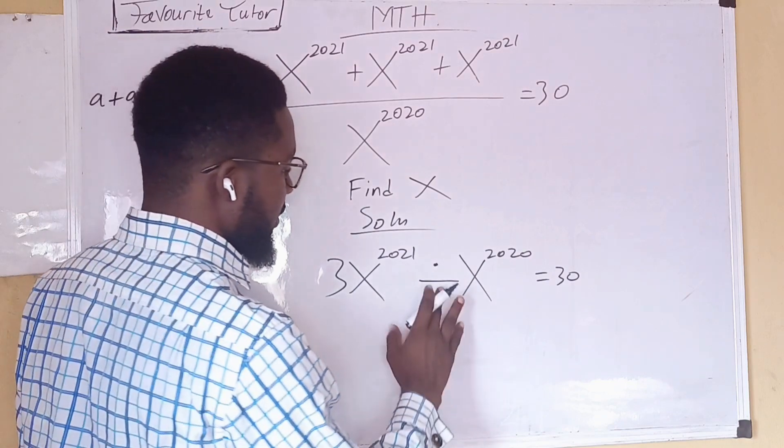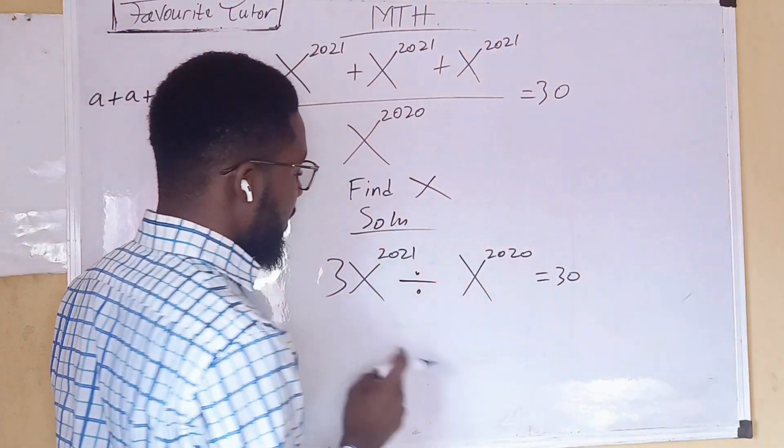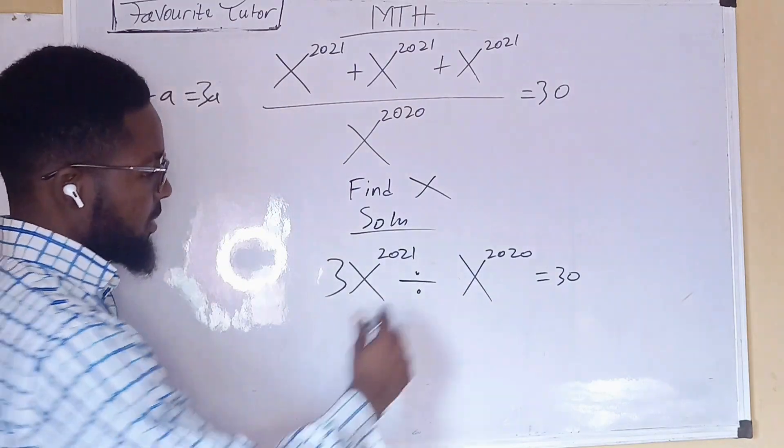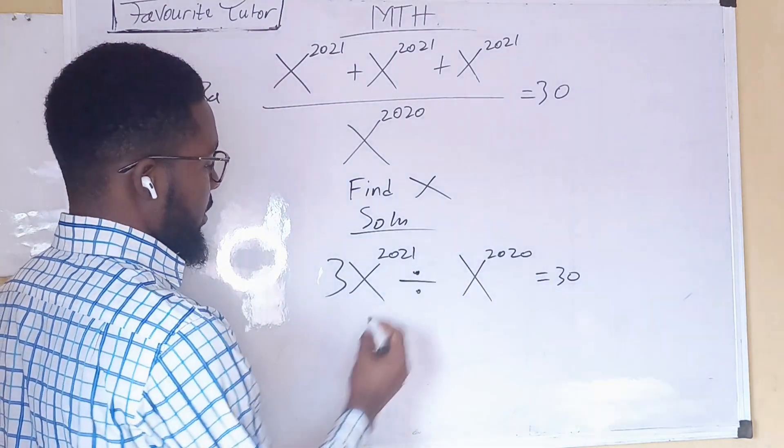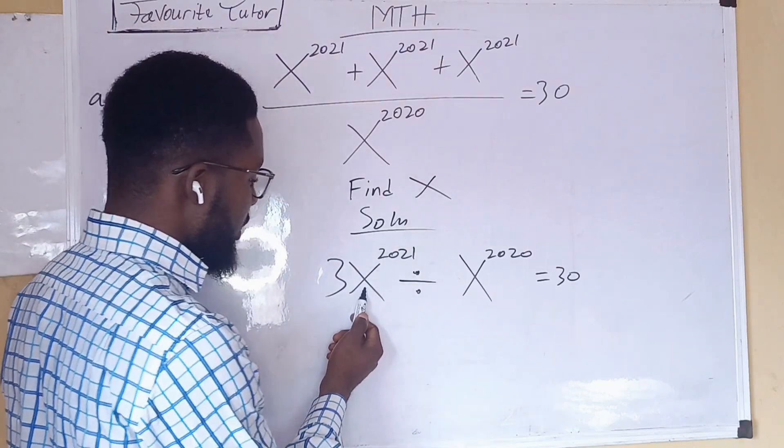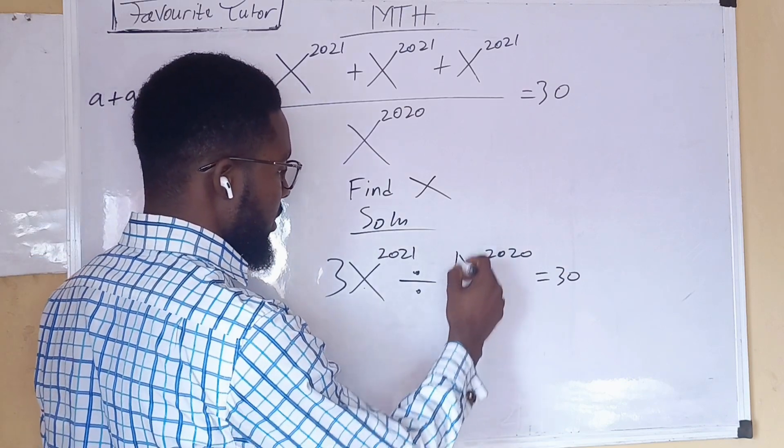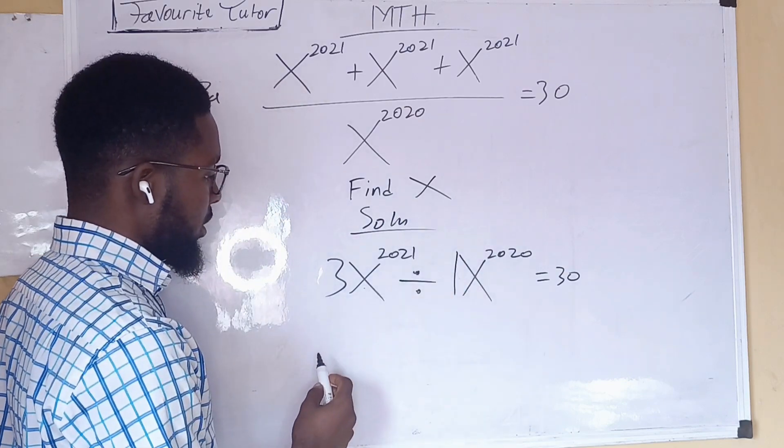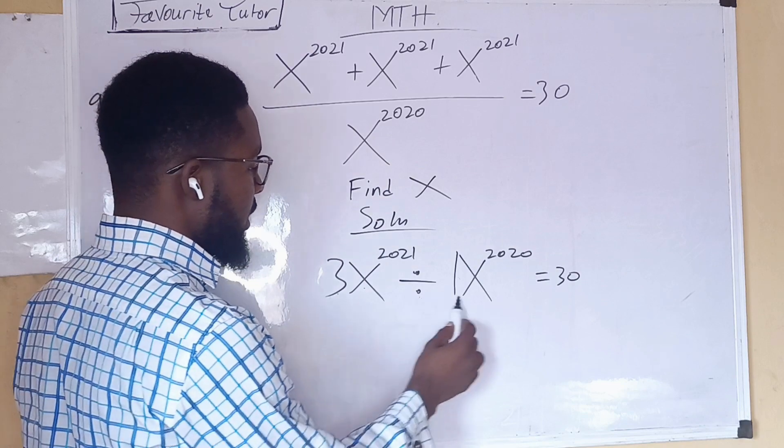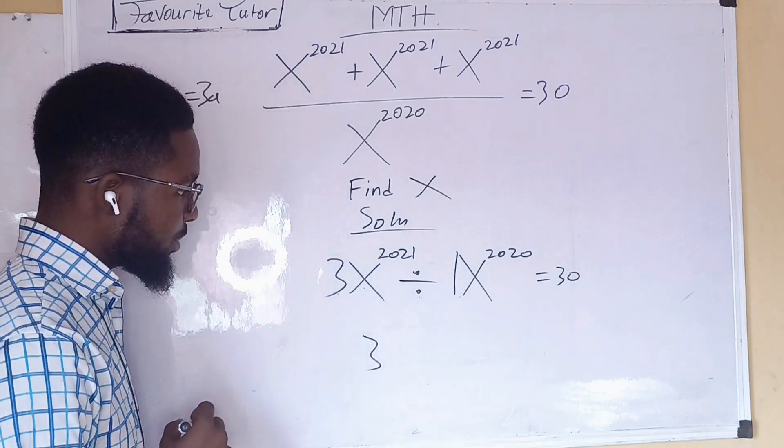So therefore, what we have here, we are going to use law of indices to solve this. The coefficient of x here is 3. The coefficient here is 1. So therefore, 3 divided by 1 is 3.